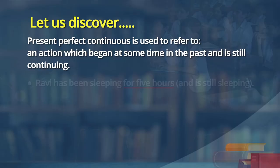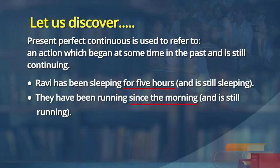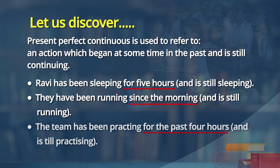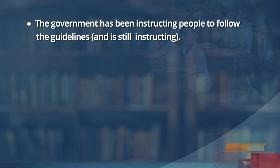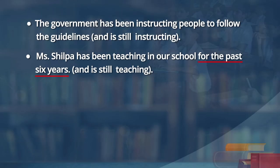Let us go back to the sentences. Ravi has been sleeping — notice: for five hours. Underline 'for five hours.' They have been running since the morning — look at the adverb 'since.' The team has been practicing for the past four hours. The government has been instructing people to follow the guidelines for some time. Miss Shilpa has been teaching in our school for the past six years. This is how present perfect continuous is constructed. The catch words are 'since' and 'for' — adverbs referring to a duration that began in the past and continues till now.